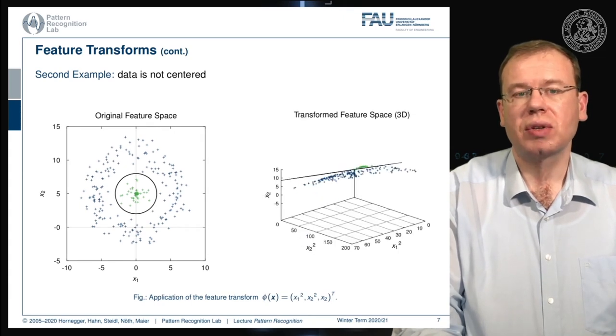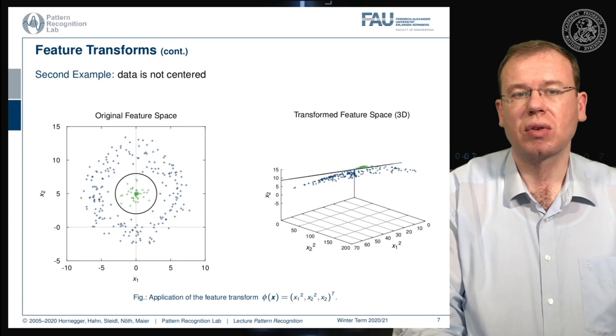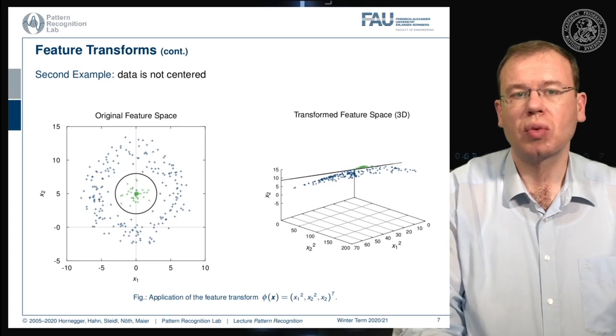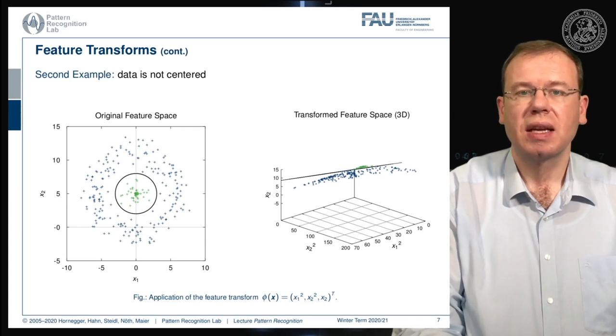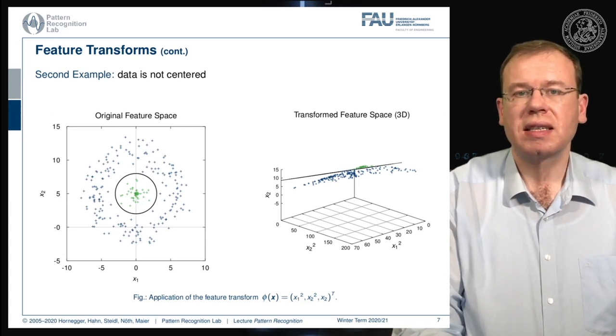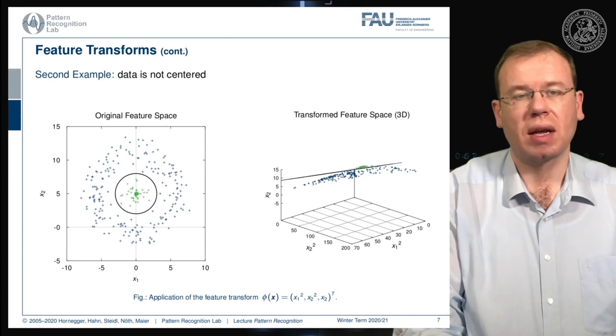But if we use a 3D transform that still includes for example x2 then you see that we can again find a linear decision boundary. So this is again the idea of using a polynomial feature transform in order to map to a higher dimensional space that then will allow us to use the linear decision boundaries.